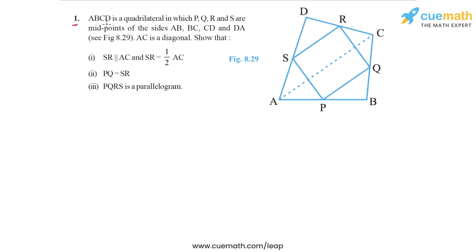In question 1, ABCD is a quadrilateral in which P, Q, R and S are the midpoints of the sides on which they lie — specifically the sides AB, BC, CD and DA. AC is a diagonal, so the dotted line that you see in the figure is a diagonal, and we have to show these three parts now.